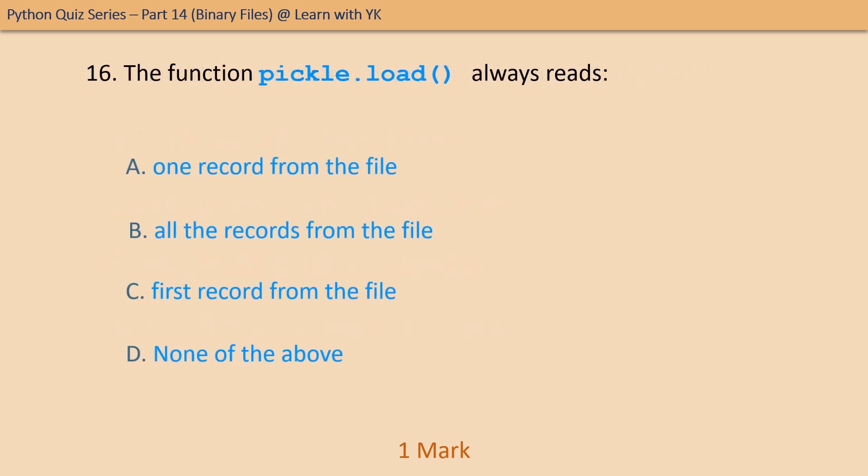Question number sixteen: the function pickle.load always reads one record from the file. Pick the correct option. The correct option is option A — it always reads one record from the file.